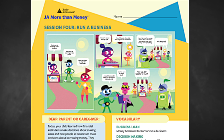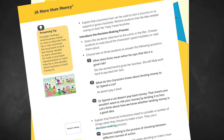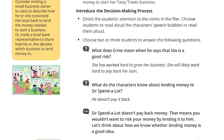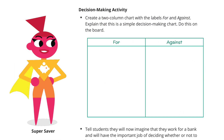Read the comic strip to the students and ask a few questions from the volunteer guide. Then introduce the decision-making process and create a two-column chart with the labels for and against on the classroom board.